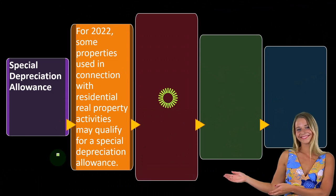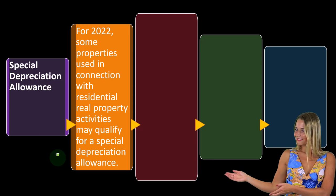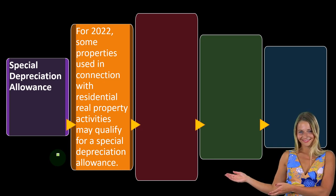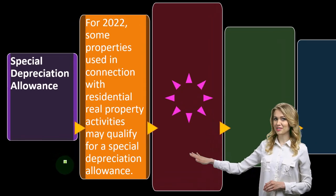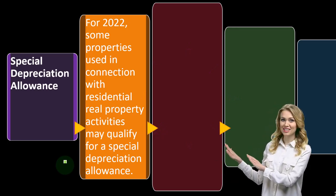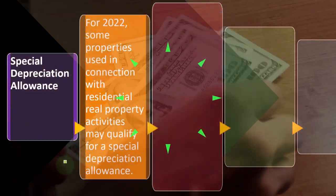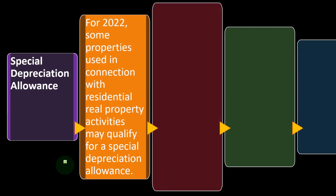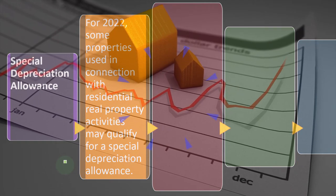Continuing our discussion of depreciation, this is a very important topic for rental property because the cost of the property itself is a huge cost — one we would like to just expense and deduct when we pay for the property. But even on a cash basis, the tax code won't allow that, forcing an accrual-type approach: putting the property on the books as an asset and then taking depreciation expense allocated over its useful life.